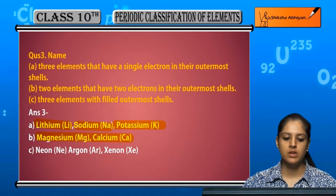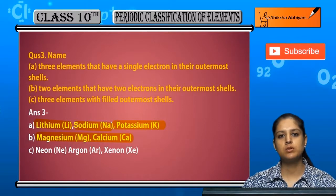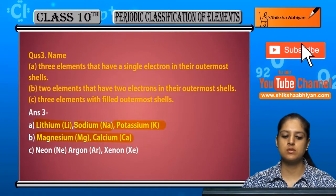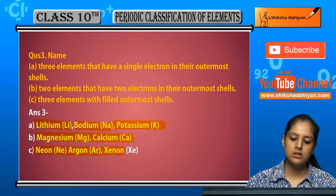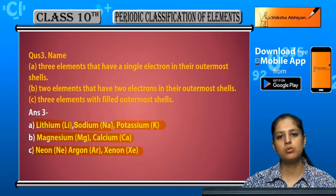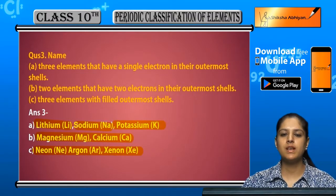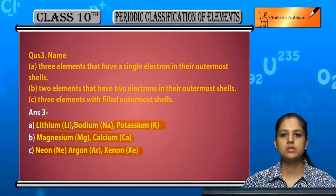Three elements with filled outermost shells — filled outermost shells इसमें होती है noble gases में। तो neon, argon, xenon, radon — ये सारी noble gases हैं, उनकी valence shell completely filled होती है। So this is about question number three.